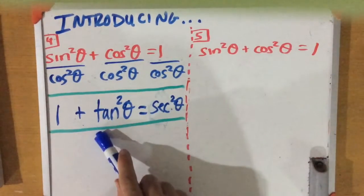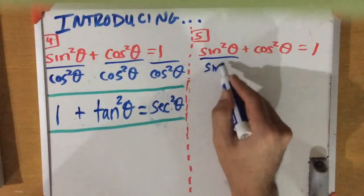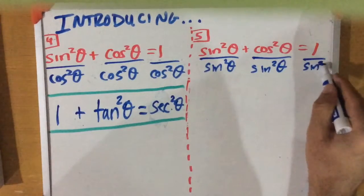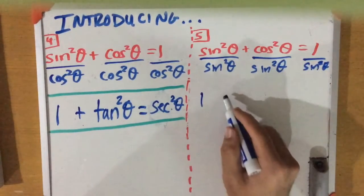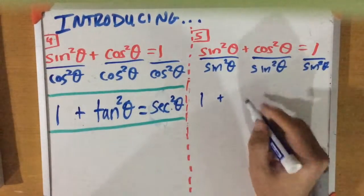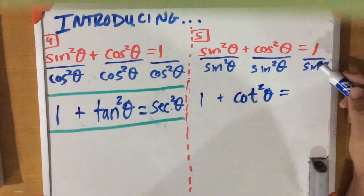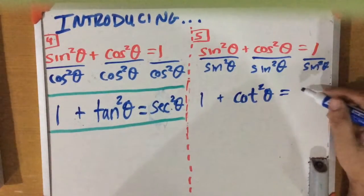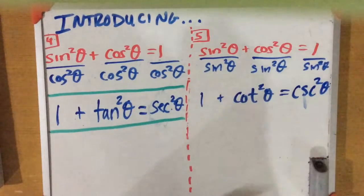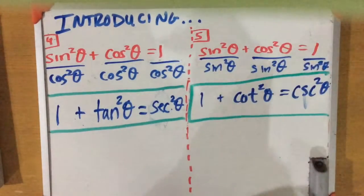To find the fifth identity, we divide every term by sine squared theta. Sine squared over sine squared is 1, cosine squared over sine squared is cotangent squared theta, and 1 over sine squared is cosecant squared theta. So we get 1 plus cotangent squared theta equals cosecant squared theta. That is the fifth and final identity we need to know.